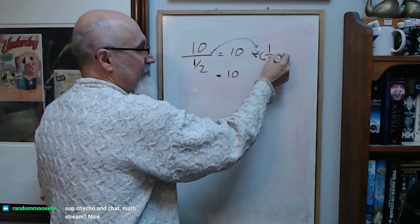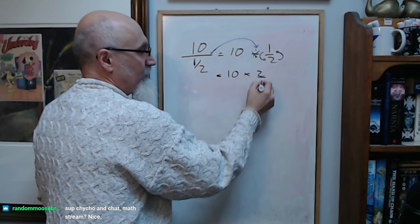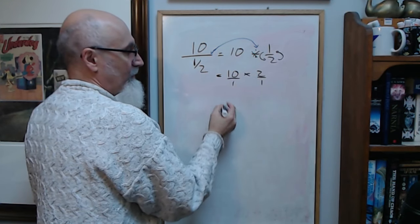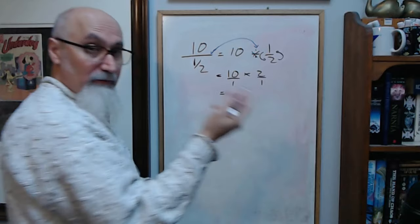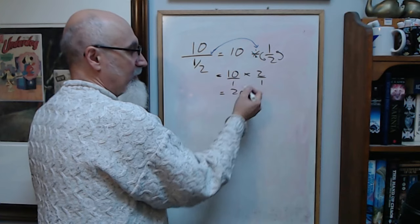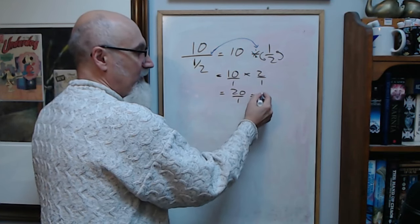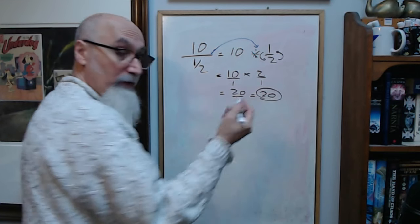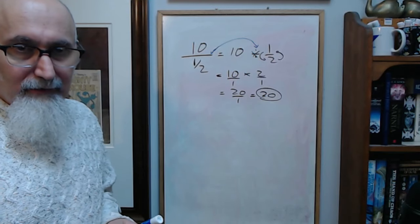When you're doing division with fractions, you change it to multiplication and flip the fraction, so times two over one. Well, ten is just ten over one. So when you multiply fractions, top multiplies top, bottom multiplies bottom. Ten times two is twenty, one times one is one. Twenty divided by one is twenty, so you get twenty pieces out of it.